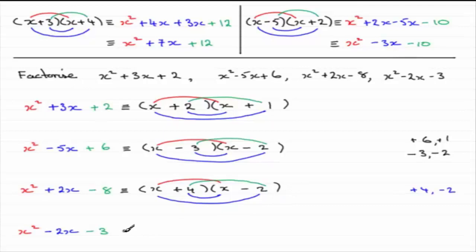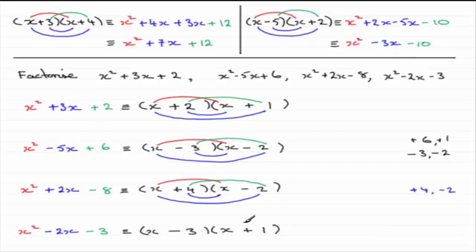One more. Again, two brackets, x and x. In this one we have a minus and a minus. The combination is minus 3 and plus 1: minus 3 times plus 1 gives minus 3, and on the other loop we get minus 3x and plus x, which gives minus 2x. I've intentionally left out the coloured brackets here, because really this is what you should aim to write down.